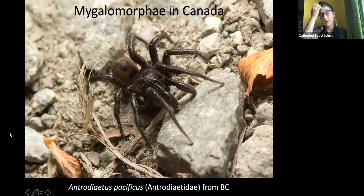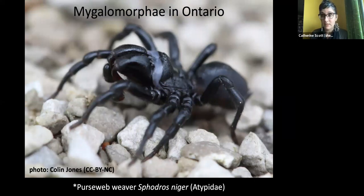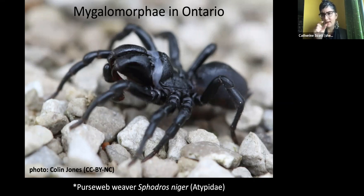In Ontario we have a spider called Sphodros niger, the pursed web spider. They're extremely rarely seen — the females live in these pursed webs and almost never come out. This is a male, sometimes seen wandering when looking for females to mate with. Although they look fearsome with massive jaws, they're actually quite small — not much longer than a penny in body length.